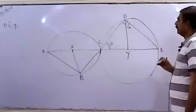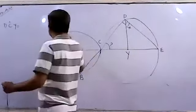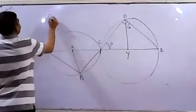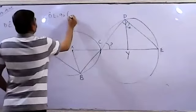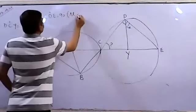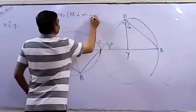This is angle CDE. What do we have to write about CDE? Angle CDE equal 90. Right angle in semi-circle.